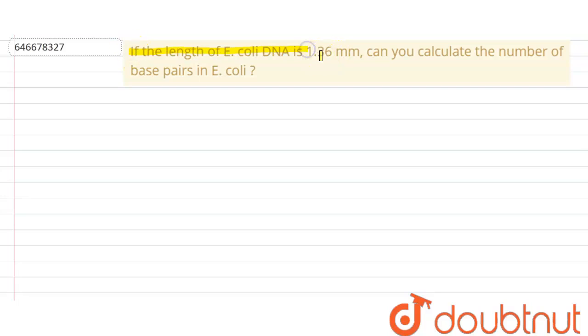If the length of E. coli DNA is 1.36 mm, can you calculate the number of base pairs in E. coli? So what is the formula for calculating base pairs?